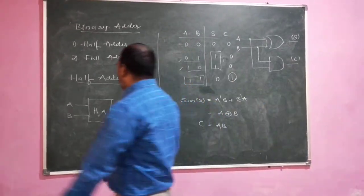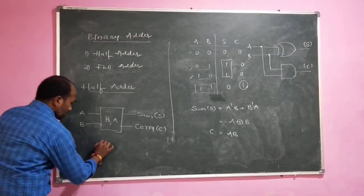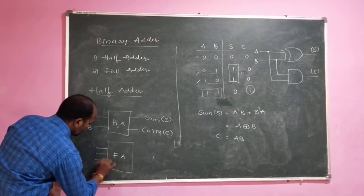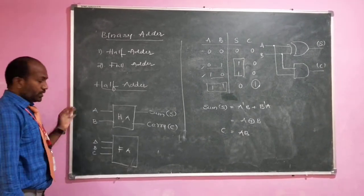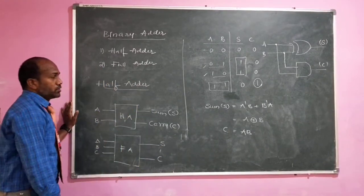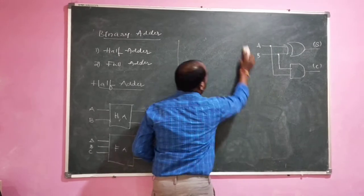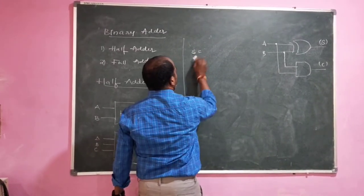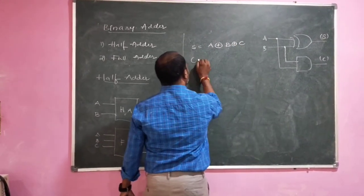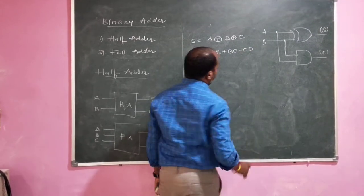Coming to the full adder: a full adder is again an additional circuitry which performs the addition of three digits. It takes three inputs — A, B, and C — and produces two outputs: sum and carry. The sum is the XOR operation between the three input digits A, B, and C. The carry equation is: carry = A·B + B·C + C·A.